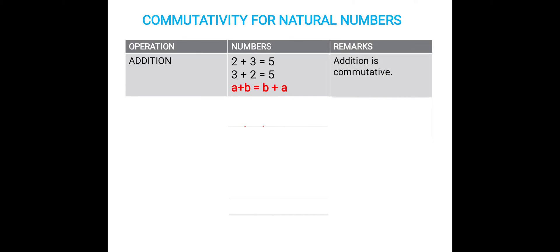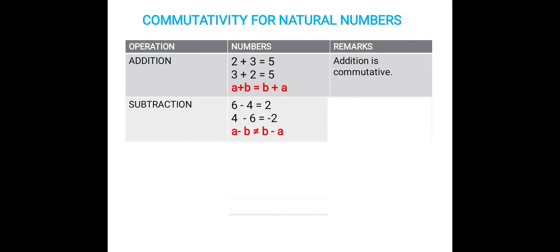Similarly, let us check for subtraction. We will now consider any two natural numbers and subtract them. 6 minus 4 equals 2. 4 minus 6 equals negative 2. So we see here when the order of the numbers has changed, the answer also changed. Therefore, a minus b is not equal to b minus a. Hence, subtraction is not commutative for natural numbers.